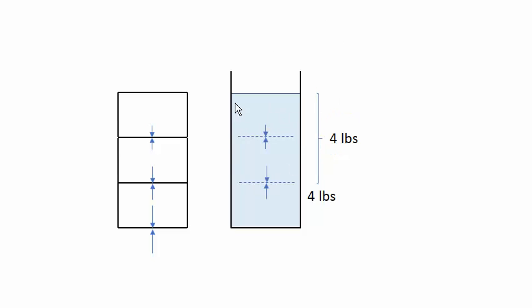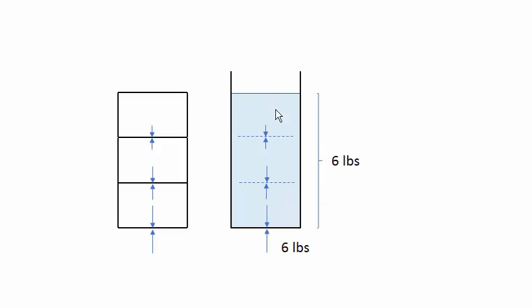This much water weighs four pounds and exerts a force of four pounds downward on this block of water, and again there is a counterbalancing force. Finally, this whole block of water exerts a total force of six pounds on the bottom of this container, and the bottom of the container has a counterbalancing force of six pounds.